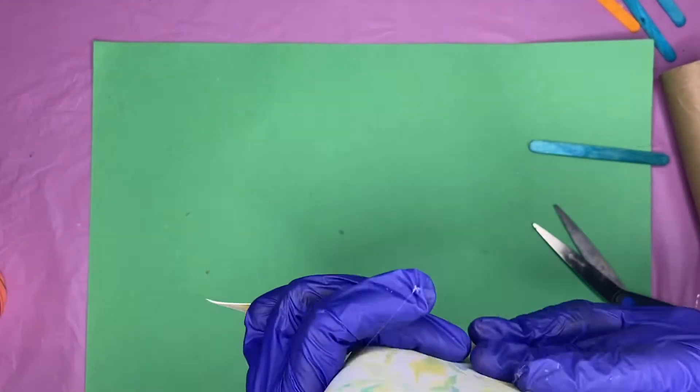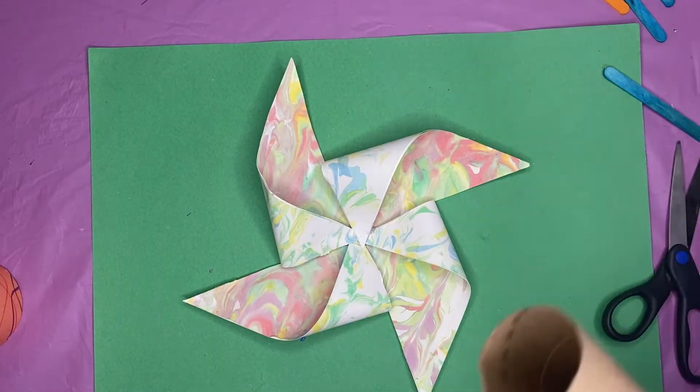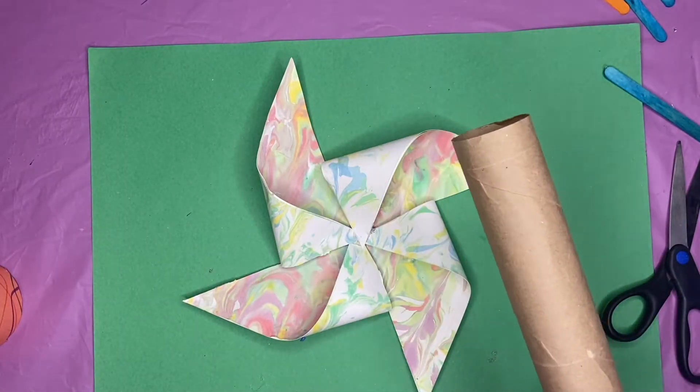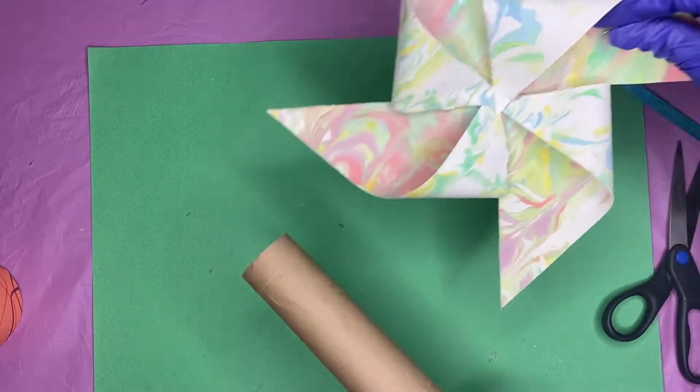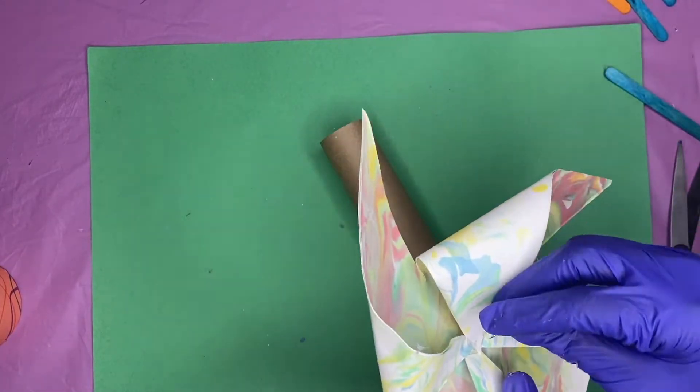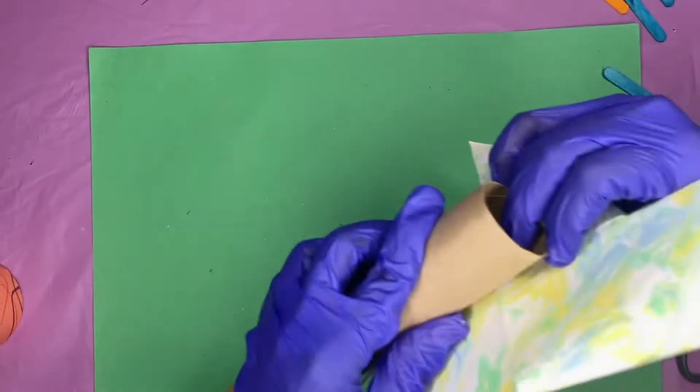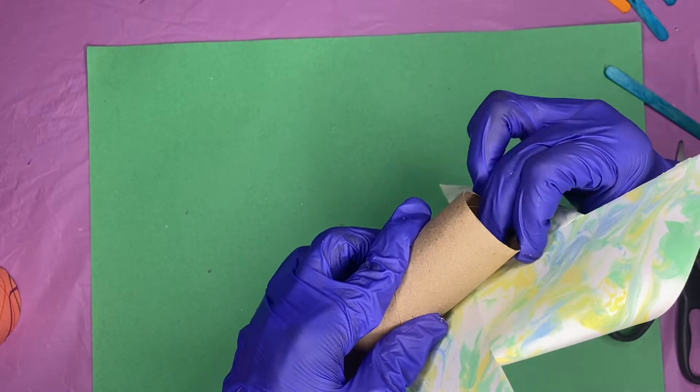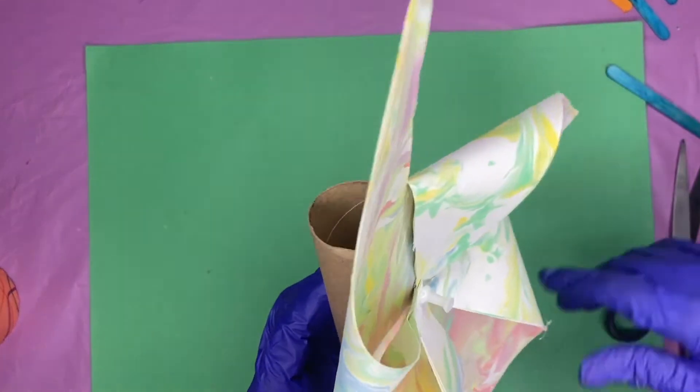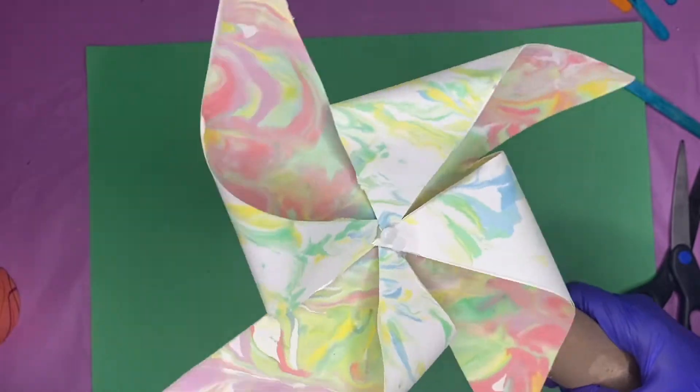So I'm going to take a tack and I'm going to stick it in the center and I'm going to attach it to this paper towel roll right here. Now I wish you could just take the tack and stick it into the paper towel roll like this, but it's not enough leverage to hold it.